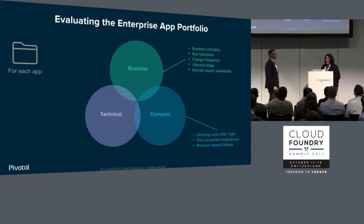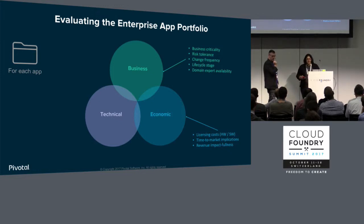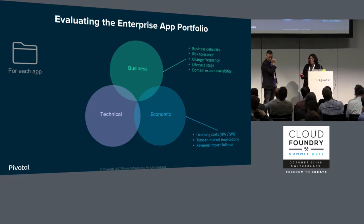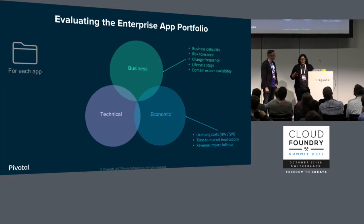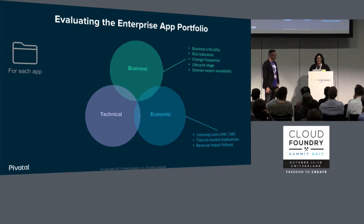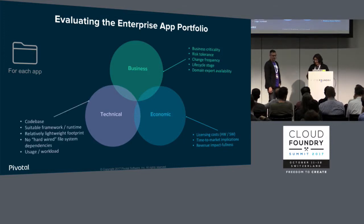Other things to look at are economic in nature: licensing costs of the middleware and other software needed to run the application, time-to-market implications, cost of the infrastructure itself. There are also operational costs — are you spending a ton on staff trying to meet specific SLAs, or maybe missing SLAs and paying penalties? These are all considerations you'd put down scores for in this kind of analysis.